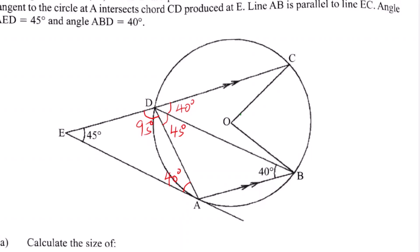By the alternate segment theorem, that angle of 45 degrees is in the alternate segment with the corresponding angle on the other side, so that angle is also 45 degrees. Along the tangent straight line, we have angles 40 plus 45 equals 85, and the remaining angle is 95 degrees, confirming angles on a straight line sum to 180.